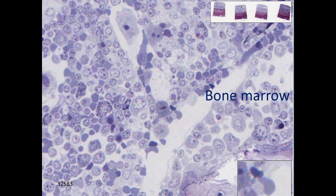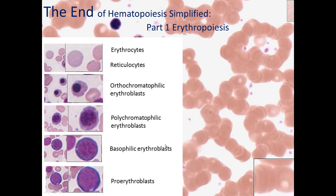We can see cells such as orthochromatic erythroblasts in the bone marrow, as well as a reticulocyte actually passing through the endothelium — here we see the endothelial cells — and entering the lumen of the blood vessel. This is the end of hematopoiesis simplified, part one: erythropoiesis.